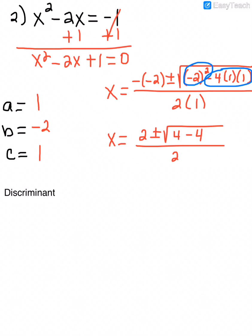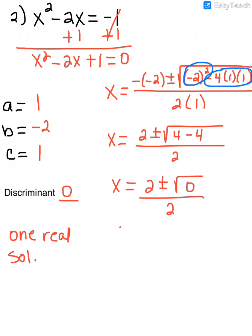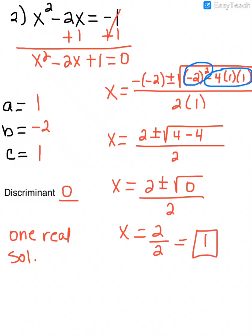The entire numerator — 2 plus or minus the square root of whatever — is all over the denominator, not just part of it being divided by 2a. So x equals 2 plus or minus the square root of 4 minus 4, which is 0. The discriminant is 0, so we have one real solution. The square root of 0 is 0, and adding or subtracting 0 doesn't change anything, so we have 2 divided by 2, which equals 1.